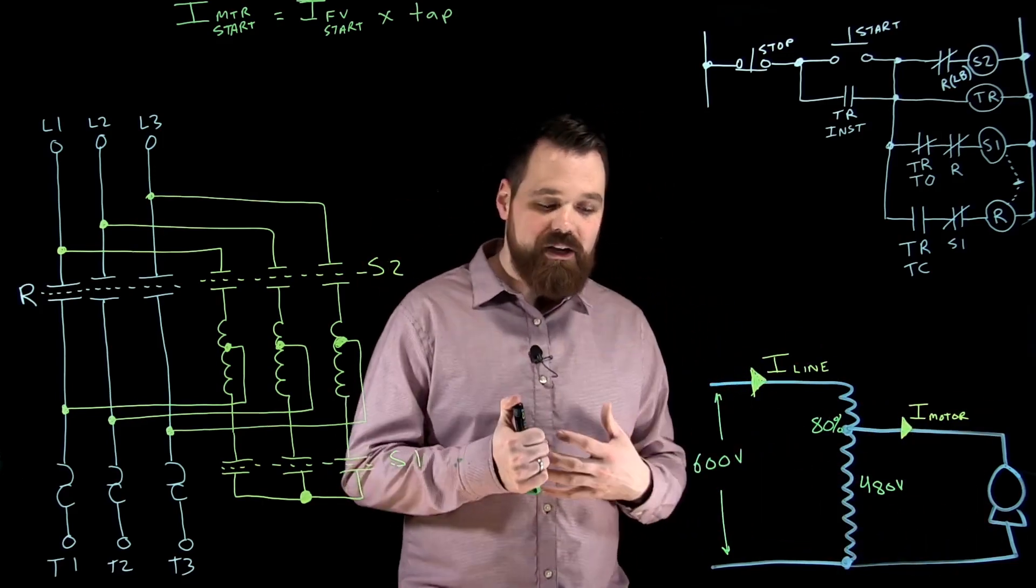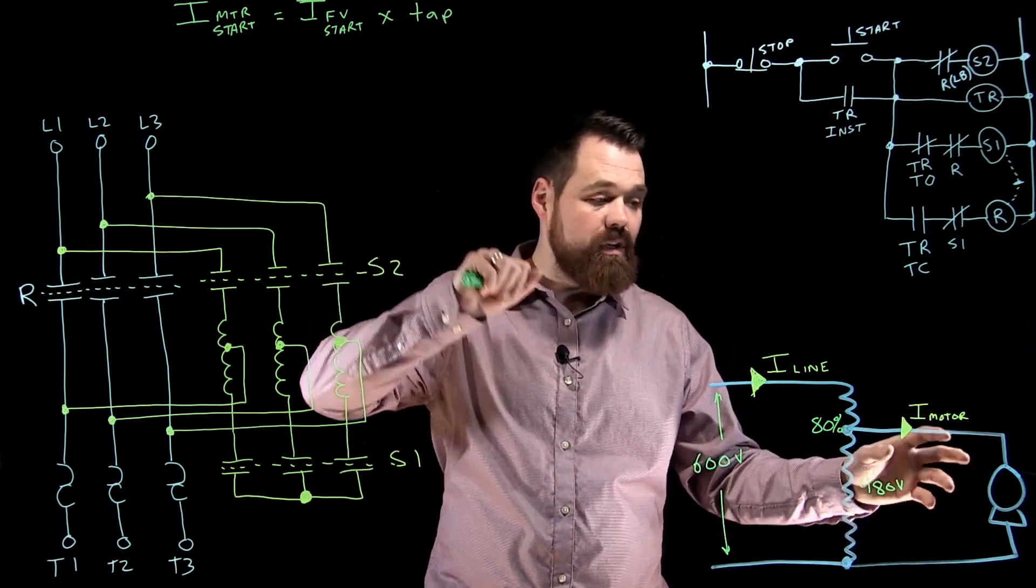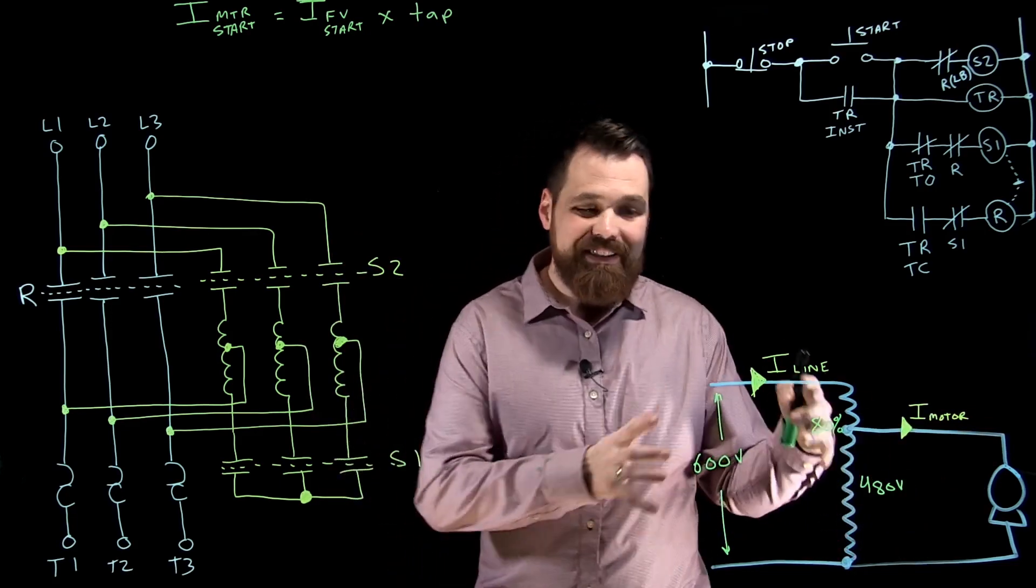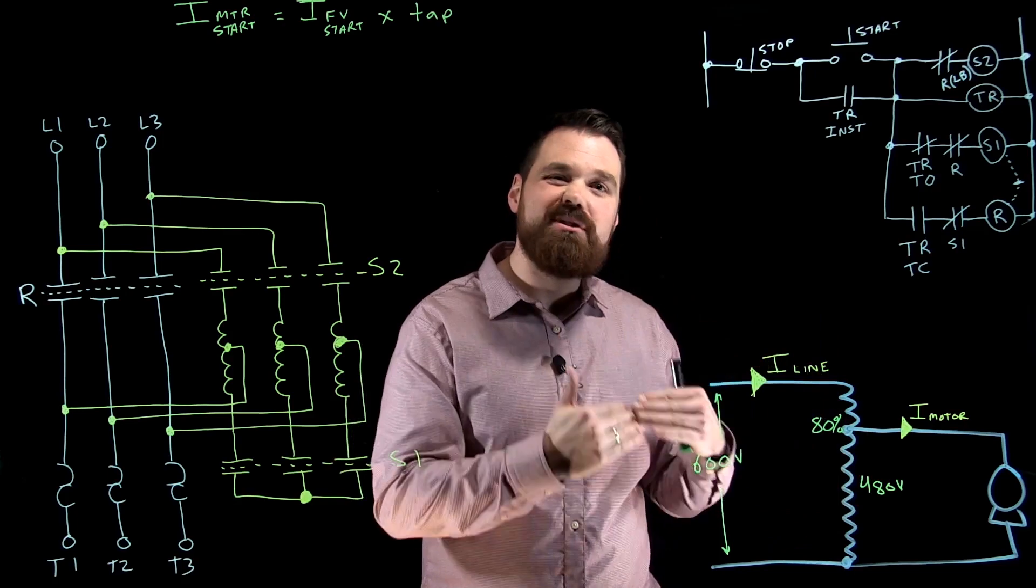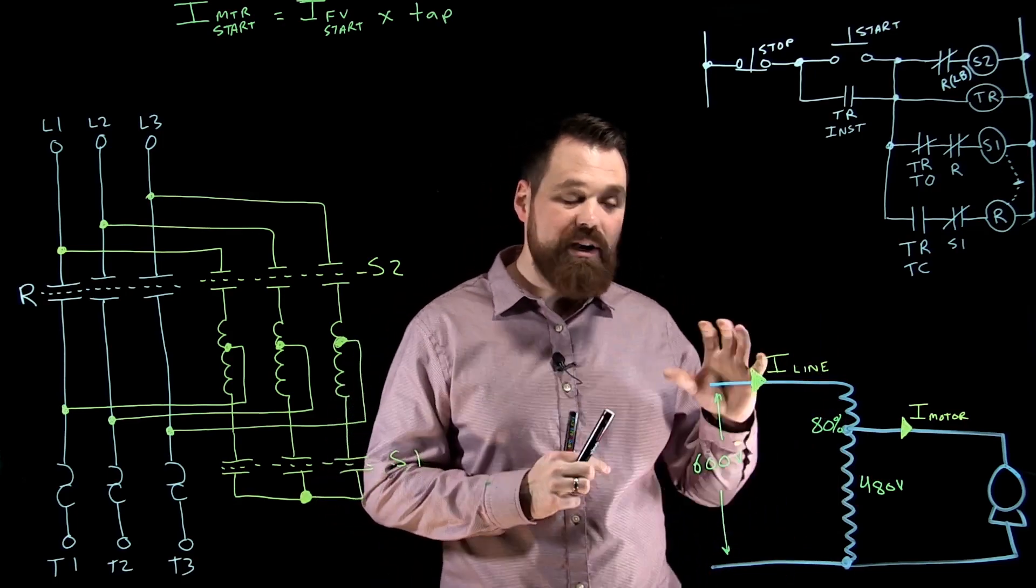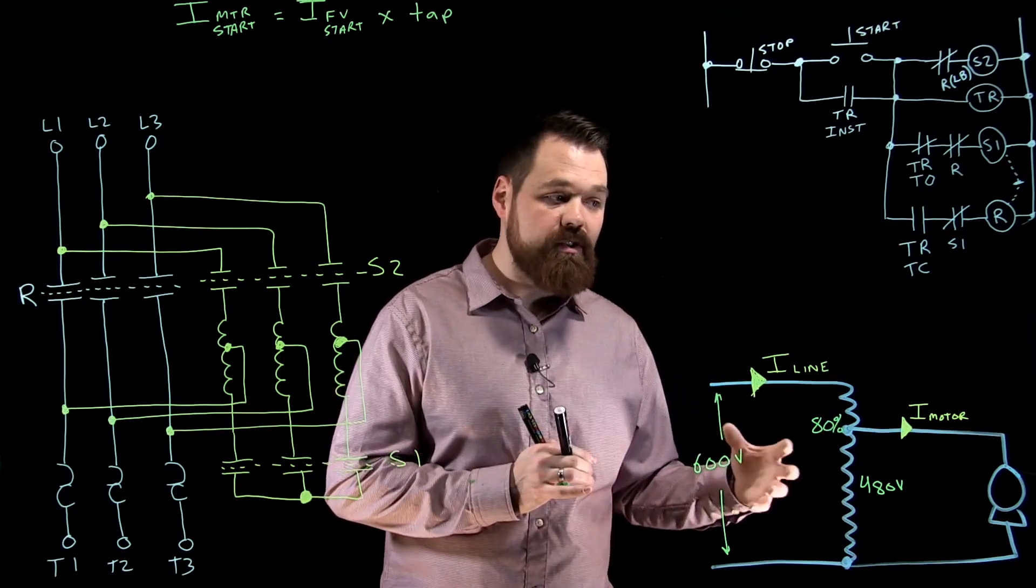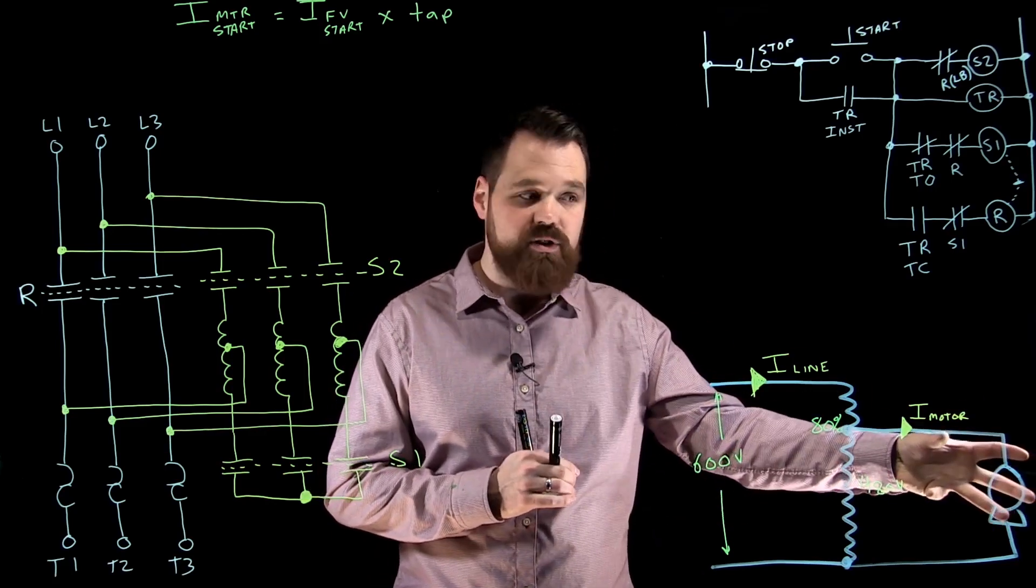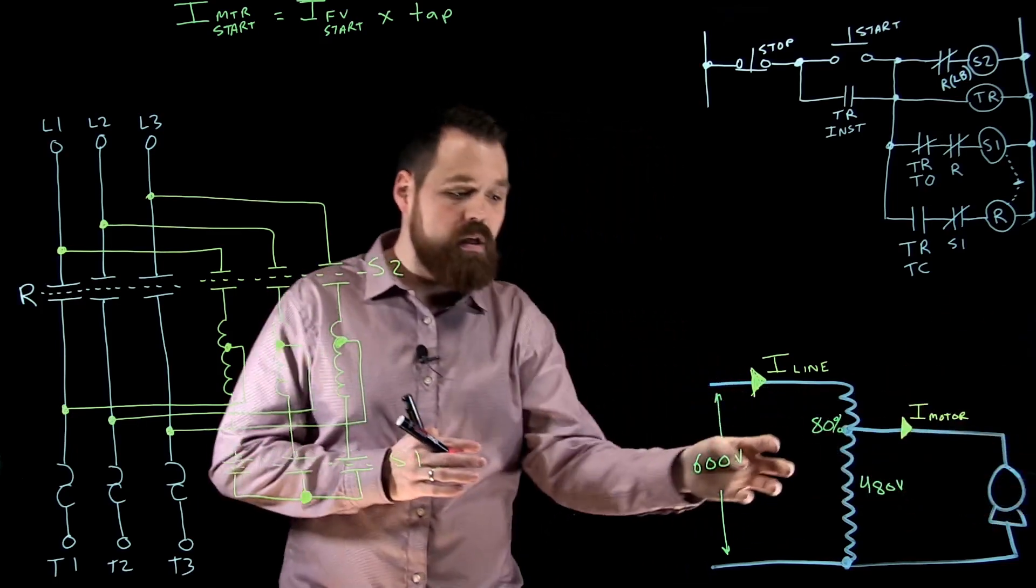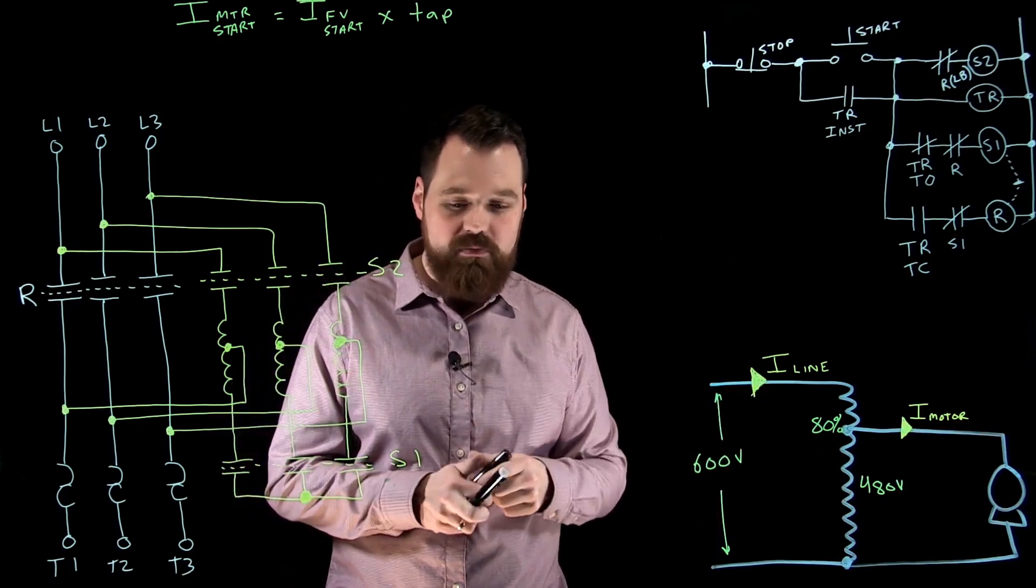Now the really nice thing about this starter—that's what my motor sees, 80% rated current. But my line current is going to reduce even further. This is because of that rule with transformers: our VA into the transformer has to equal our VA out. Because our voltage is higher here, our current gets to drop down even more.